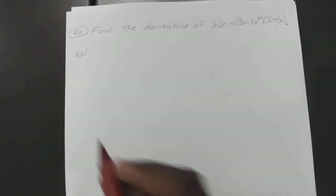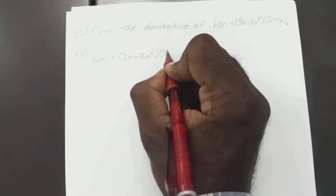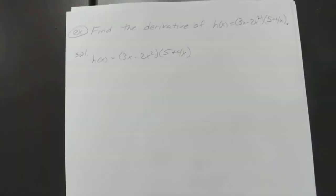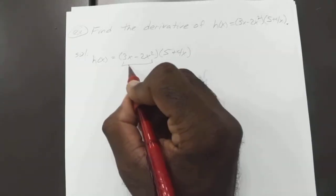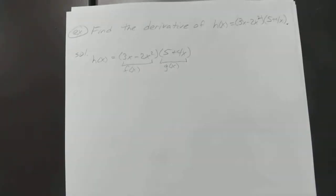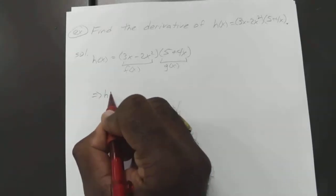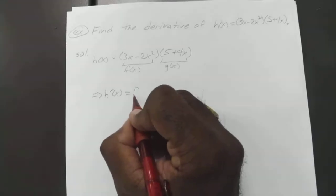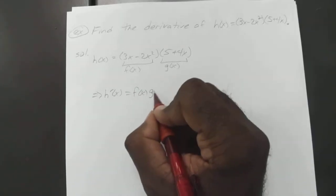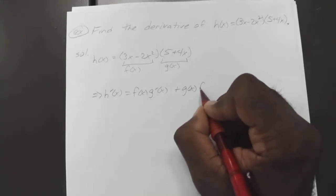All right, so for this one, if you have h of x equal to 3x minus 2x squared times 5 plus 4x, then this is your f of x and that's your g of x. So that means your h prime of x is just going to equal your first times the derivative of the second, plus the second times the derivative of the first.